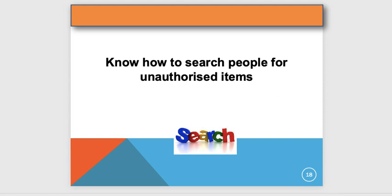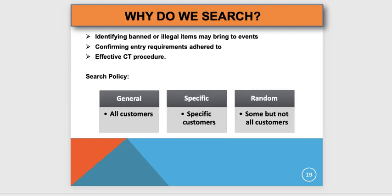Searching may happen inside or outside the stadium but most likely at the turnstile — the entrance point. We search to look for banned, prohibited, and illegal items; to confirm that entry requirements are adhered to; and to carry out an effective counter-terrorism procedure. Counter-terrorism means ensuring no one has anything that may cause harm — explosives, IEDs, weapons, knives.